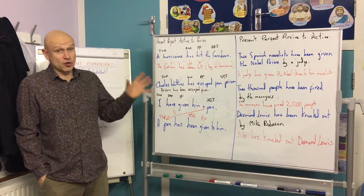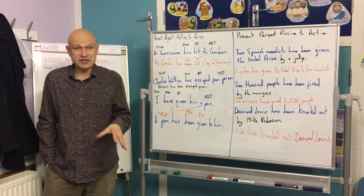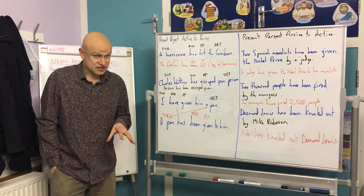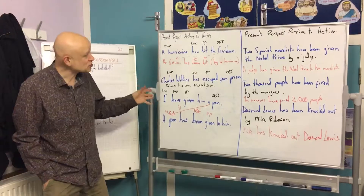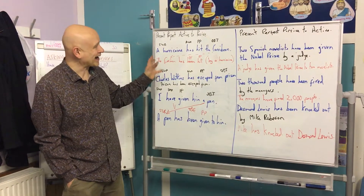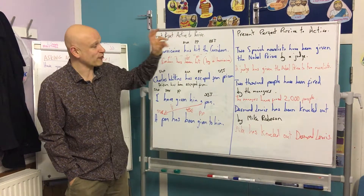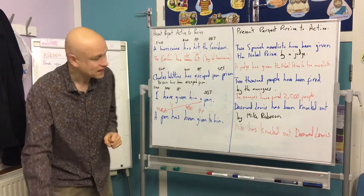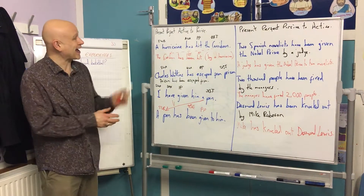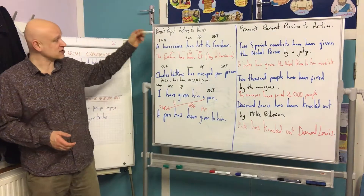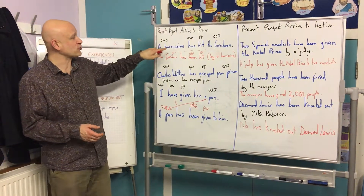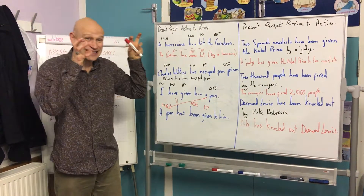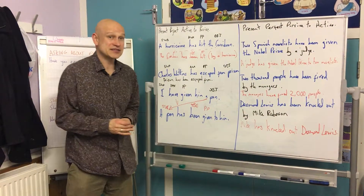The other thing we did on the intermediate lesson today was going over active to passive or passive to active. We use an active sentence to show that something or somebody did something.